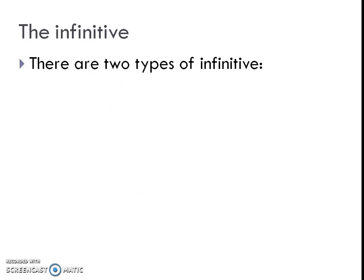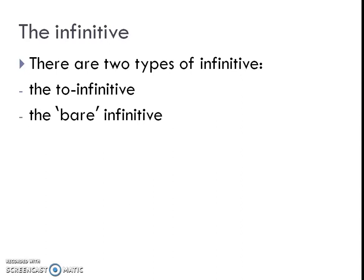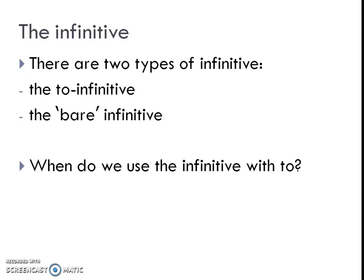The infinitive has two types: the to-infinitive and the bare infinitive. The to-infinitive uses 'to' before the verb — like to eat, to go, to play — whereas bare infinitives are without 'to' — like 'worked' or 'talked'.